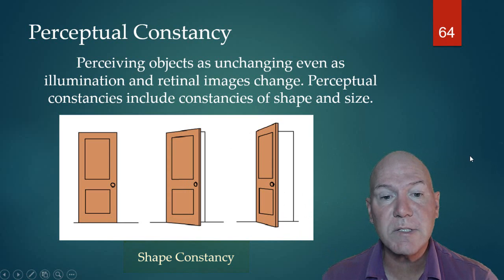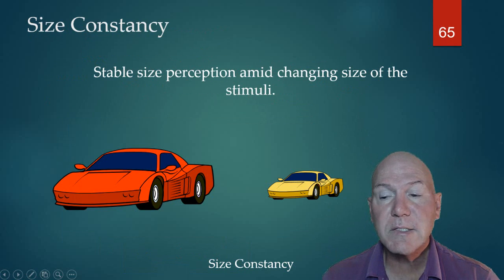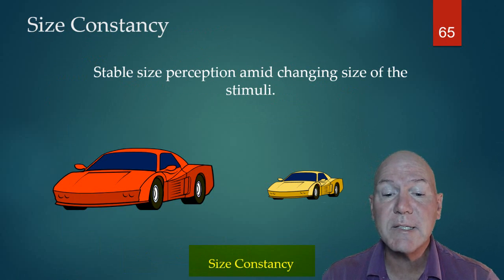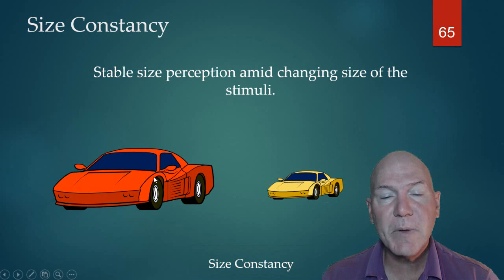Size constancy is the idea that stable size perception amid changing size of the stimuli—we still perceive it as being the same size. So therefore we have this little car here and this bigger car. We assume it's the same size, so this car must be farther away because of the relative size.